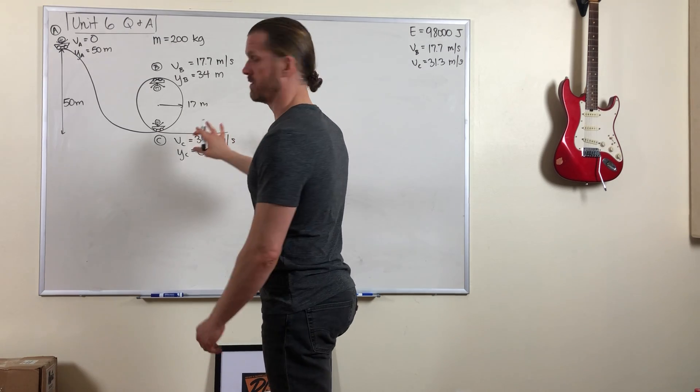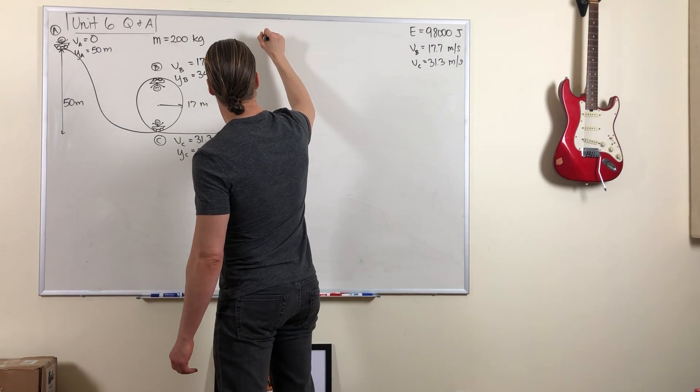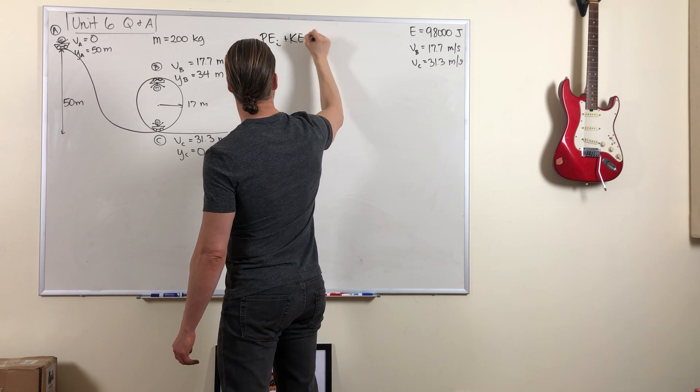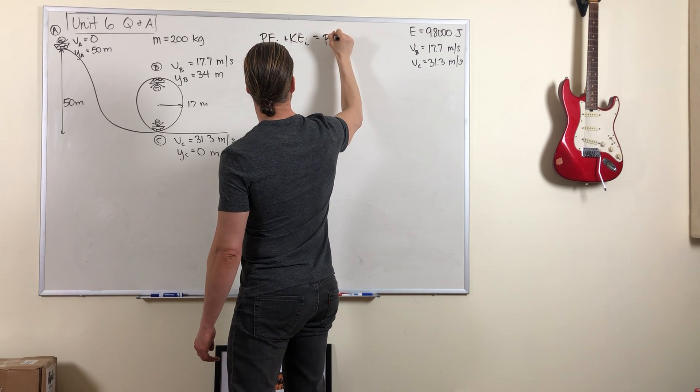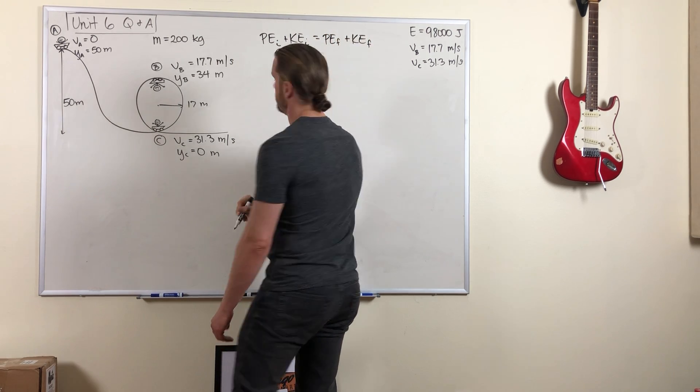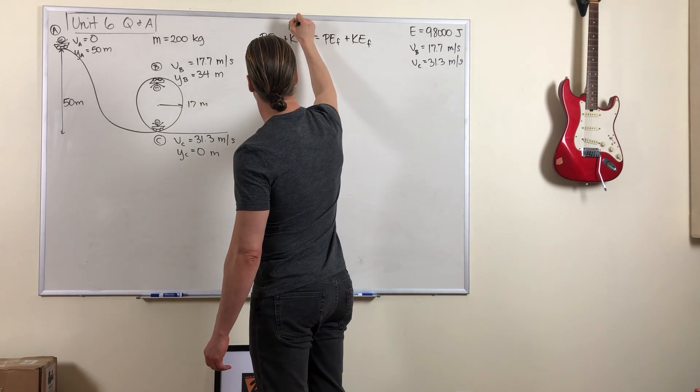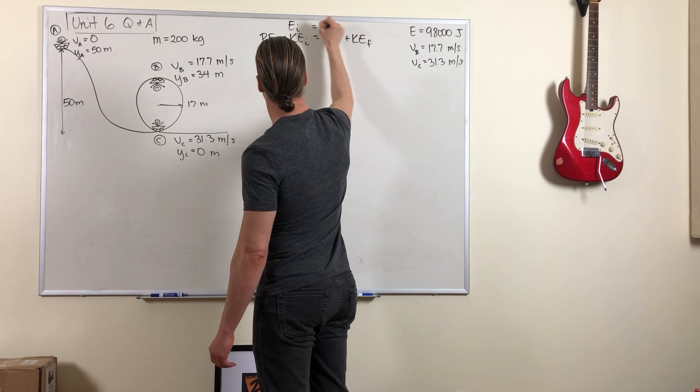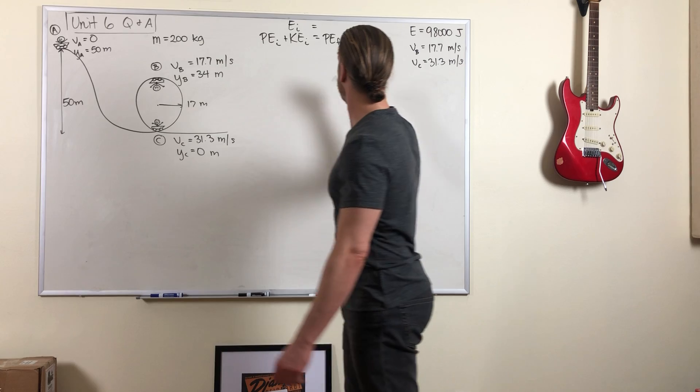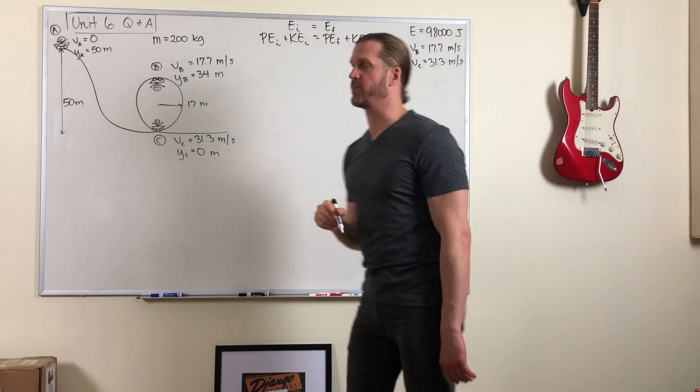So the way we tackled this was we said PE initial plus KE initial equals PE final plus KE final. In other words, the total energy in some initial state at some initial position equals the total energy at some final position.